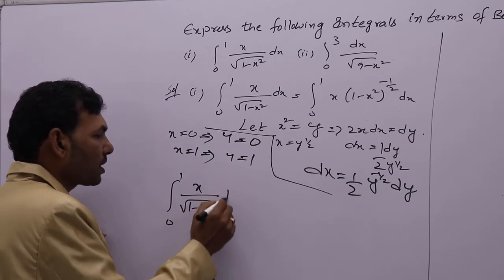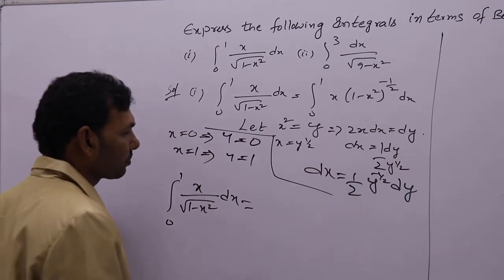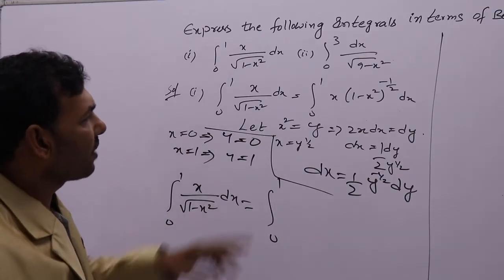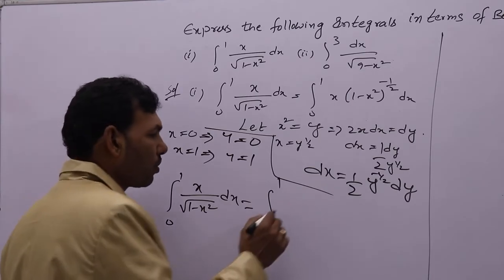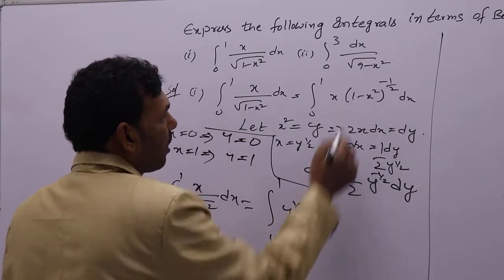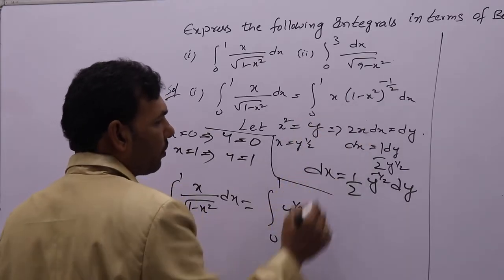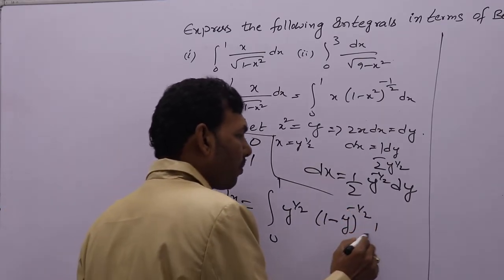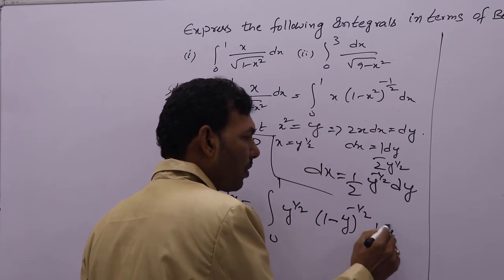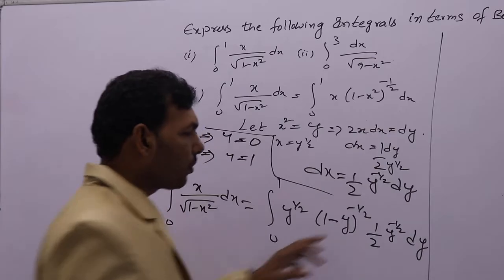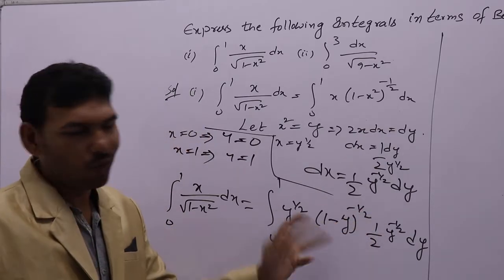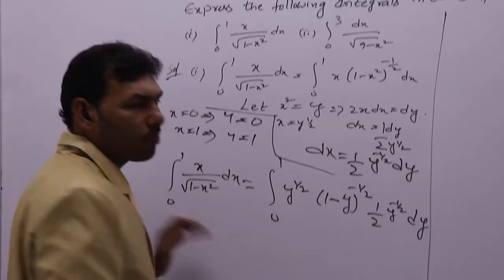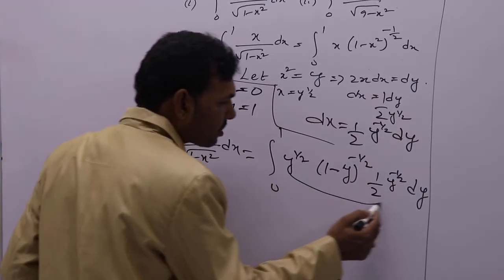Now substitute: integral 0 to 1 of x by root 1 minus x square dx equals integral 0 to 1. What is x? x is y power 1 by 2. And 1 minus x square whole power minus 1 by 2, and dx is 1 by 2 y power minus 1 by 2 dy. Then y power 1 by 2 plus y power minus 1 by 2: 1 by 2 minus 1 by 2 is 0, so y power 0 equals 1 — these two terms get cancelled.